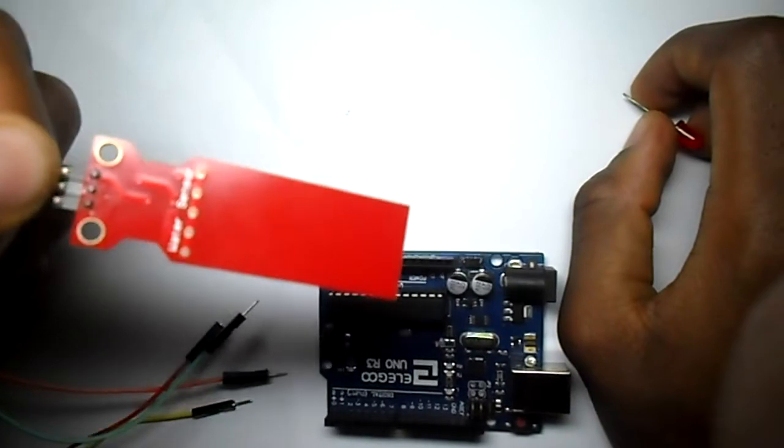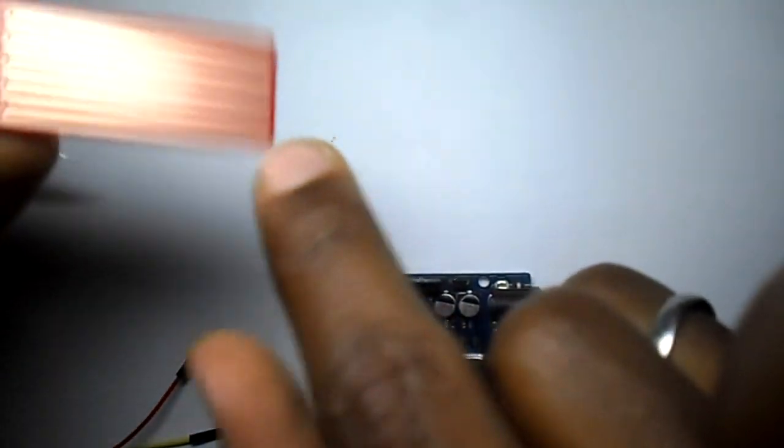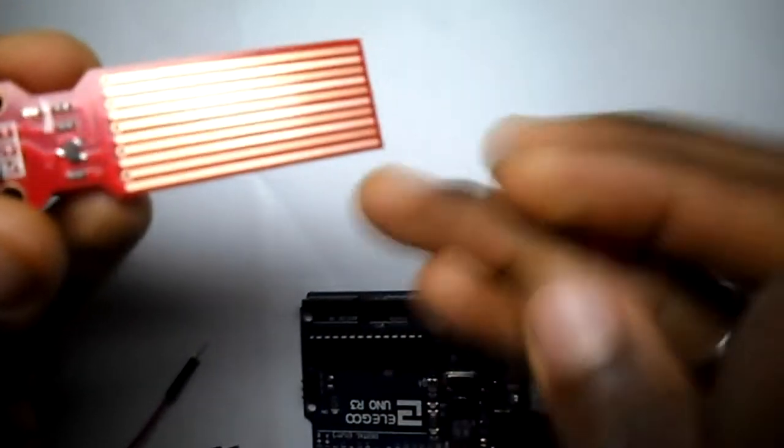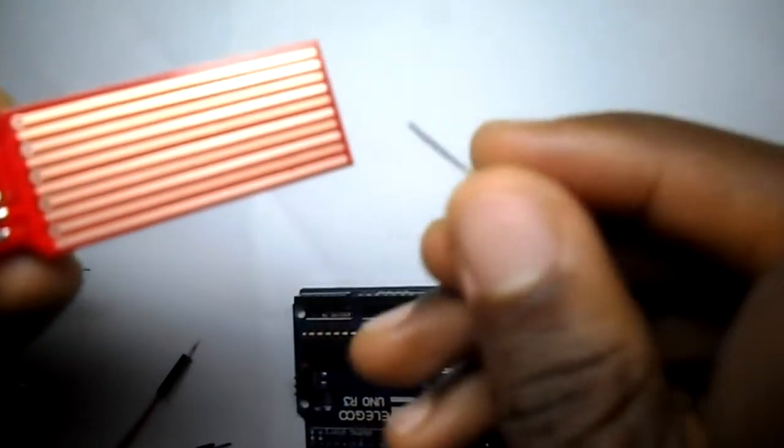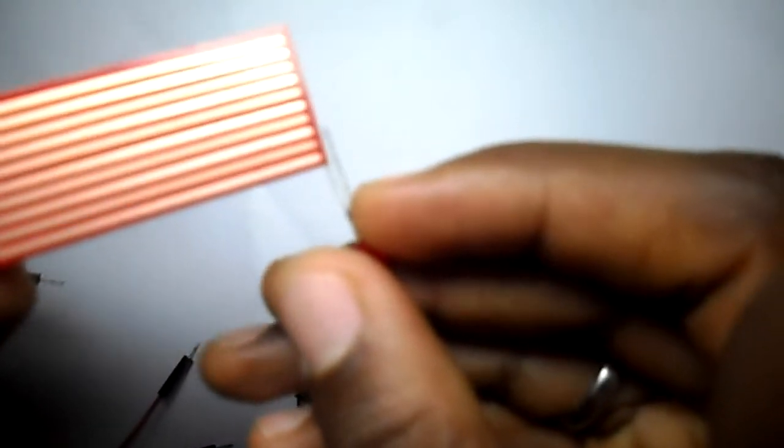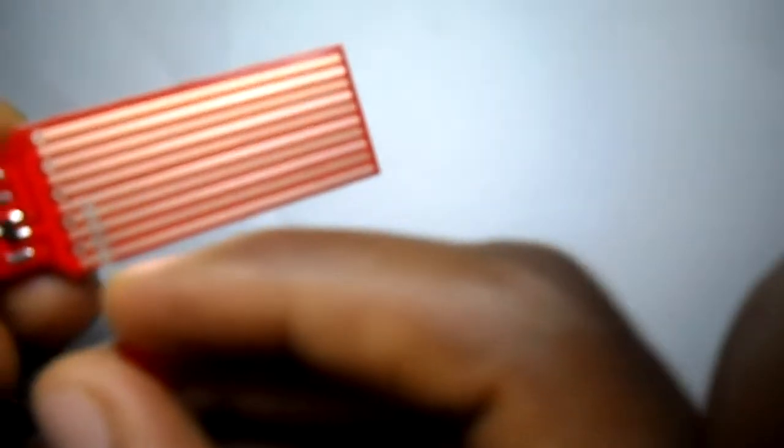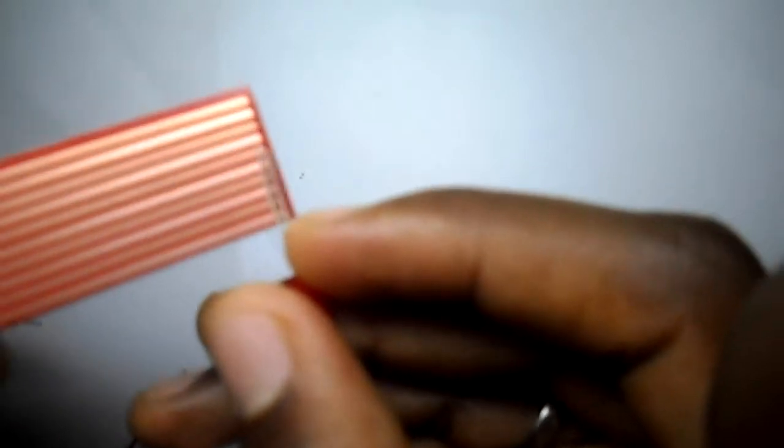So we have here a water sensor. A water sensor functions in such a way that it reads water level. It has a potentiometer embedded into it. So as the water level rises from down here to the top part, that is how it measures the level of the water.